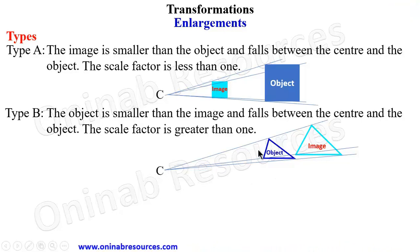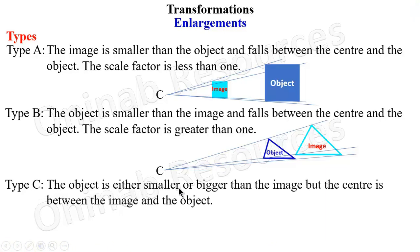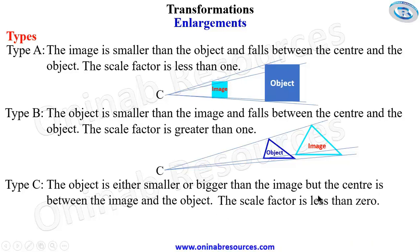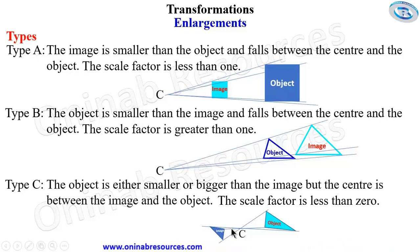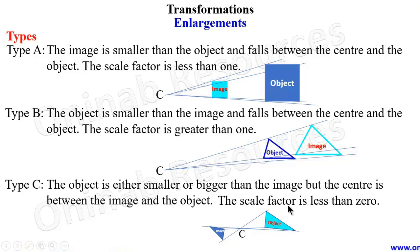For Type C, the object is either smaller or bigger than the image, but the center is between the image and the object. The scale factor is less than zero — it is negative. In the demonstration, this can either be the image with this as the object, or vice versa, but the center is always between the image and the object. This type of enlargement has a negative scale factor.